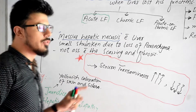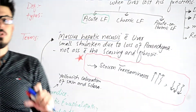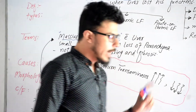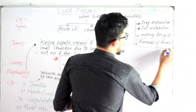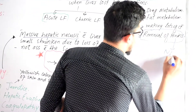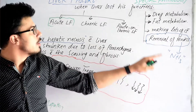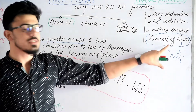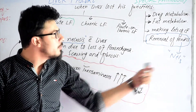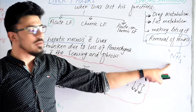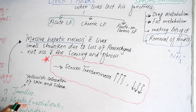Hepatic encephalopathy means the liver is damaged to the extent that it damages the brain. One of the most important liver functions is removal of toxins, mainly ammonia. If the liver is not working properly, toxins accumulate in the blood, reach the CNS, and ultimately damage the brain.